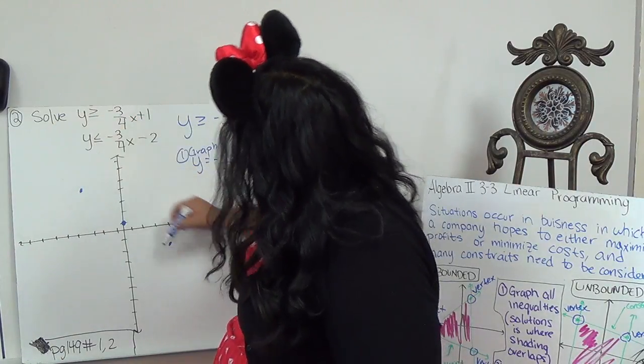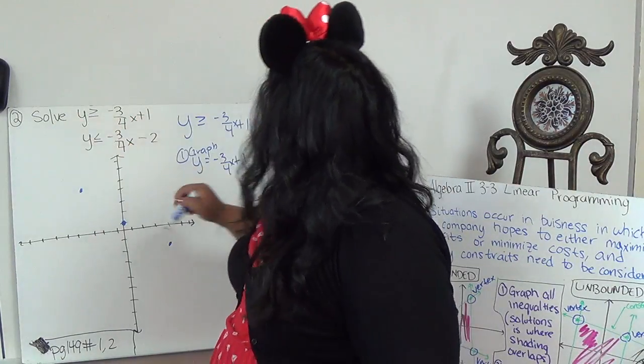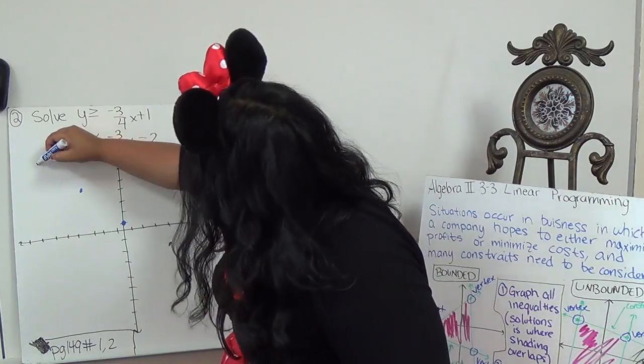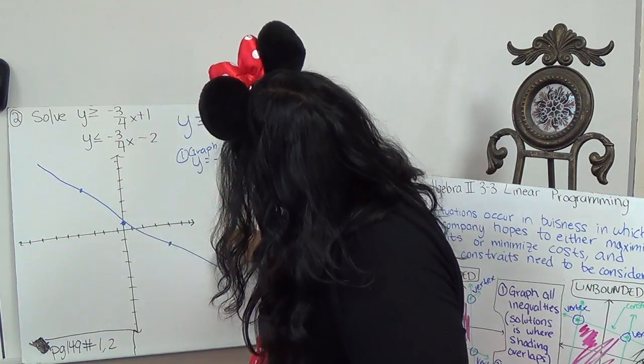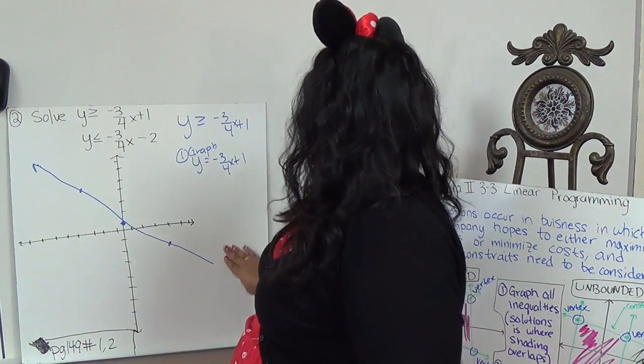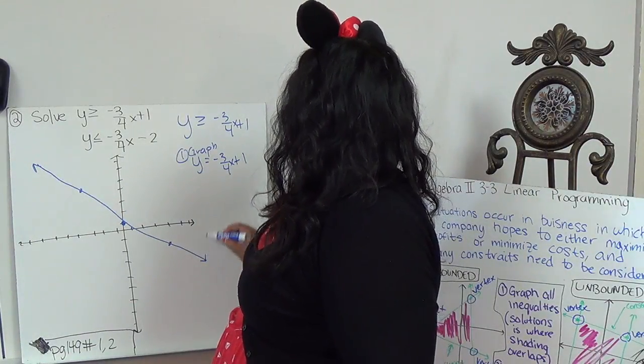I can go backwards by putting the negative on the bottom. So I go up 3 but back 4. That way I'm not like going off the graph. And this is a line underneath. So this is in fact solid. Super squiggly. I apologize.